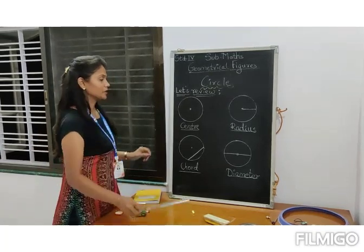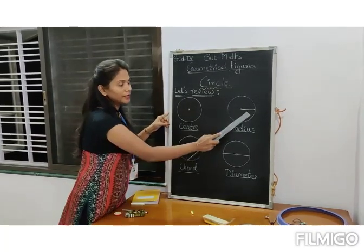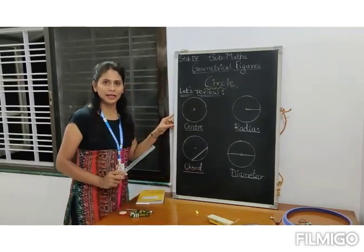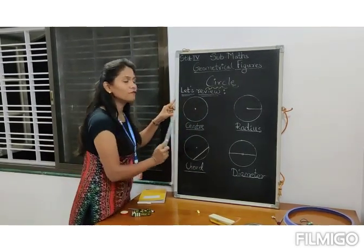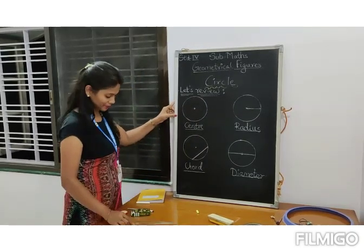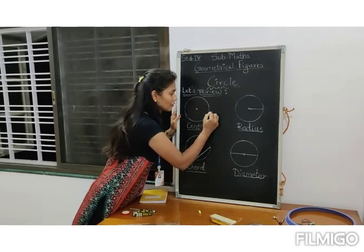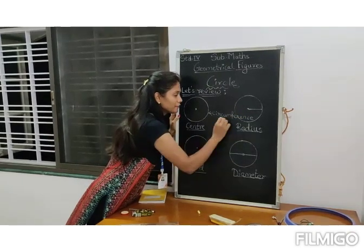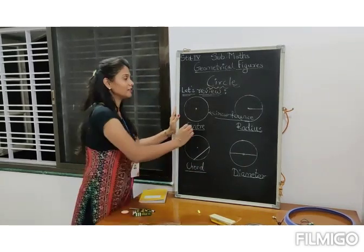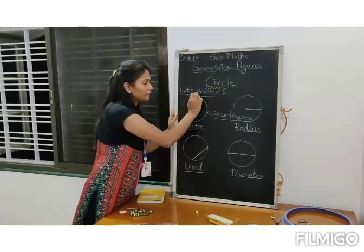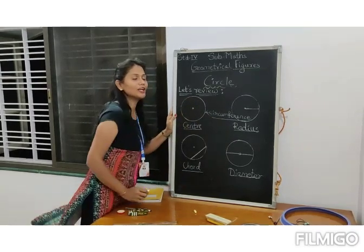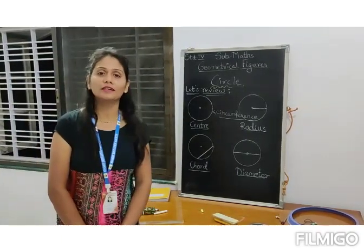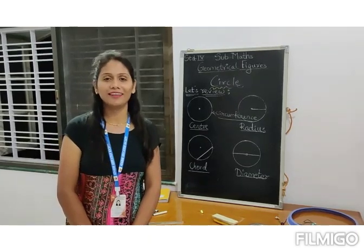So we have learnt center, radius, chord, and diameter. One more thing to understand: the full boundary of a circle is called the circumference. As you go to higher standards, you will learn more about circumference — the full length of the boundary of a circle. I hope you all understood this topic of circle. Please go through the video and understand it more clearly. Bye.